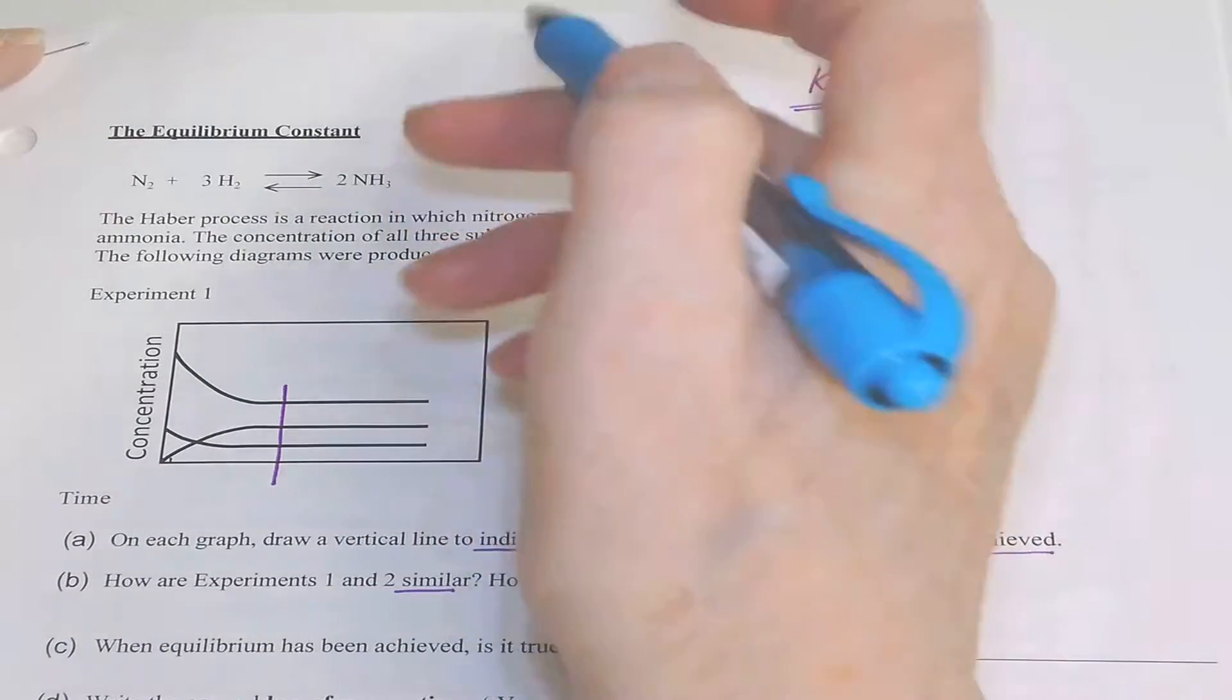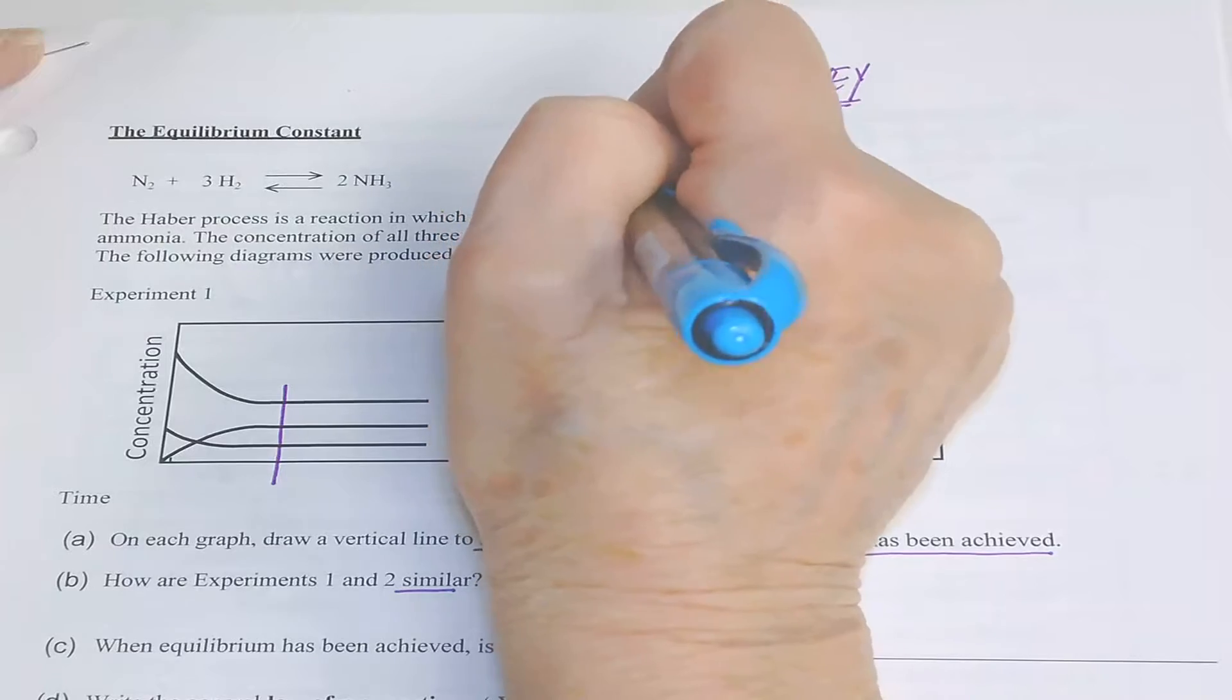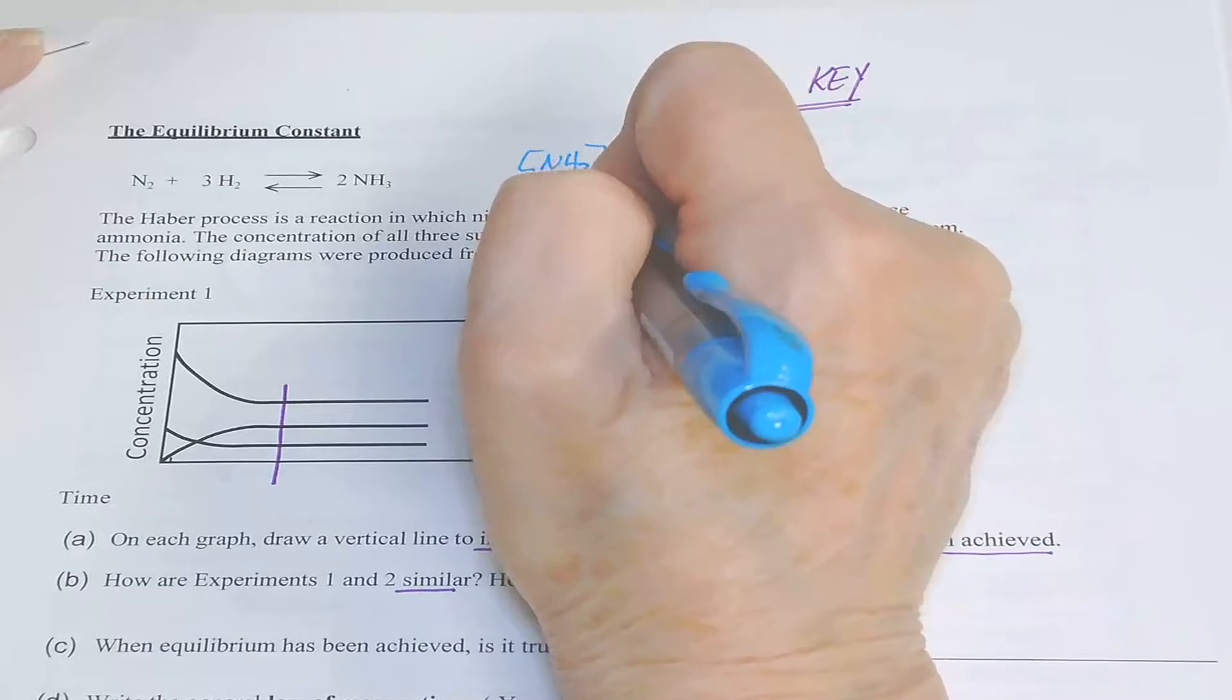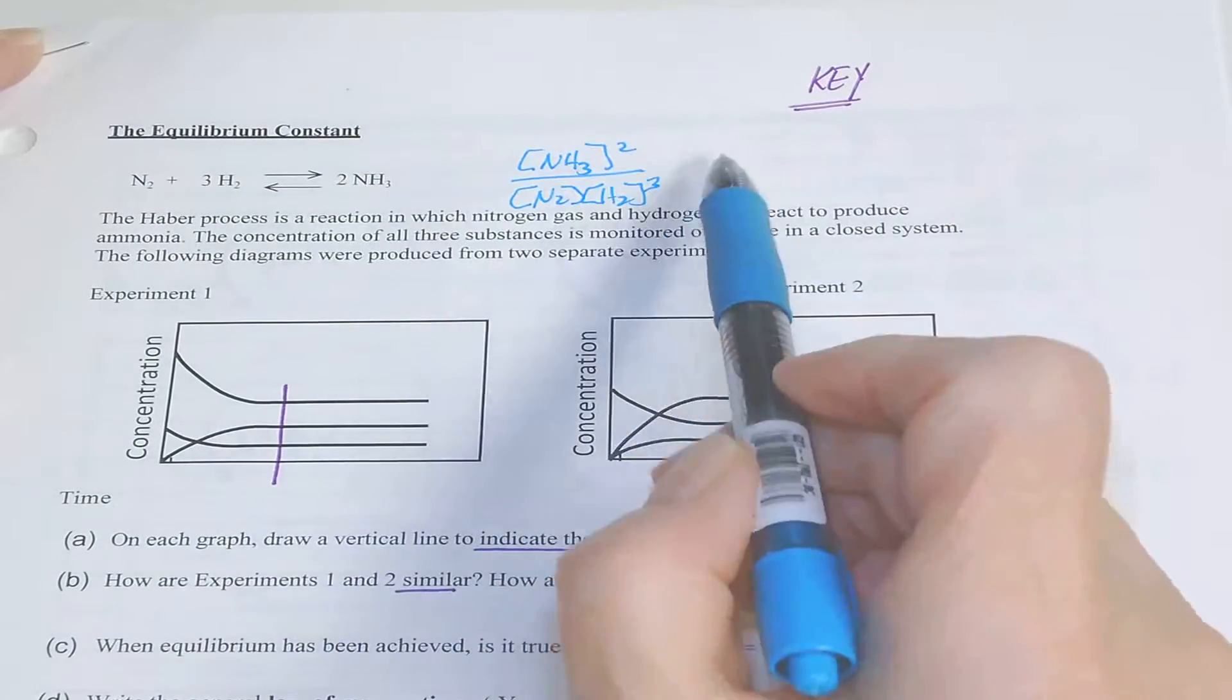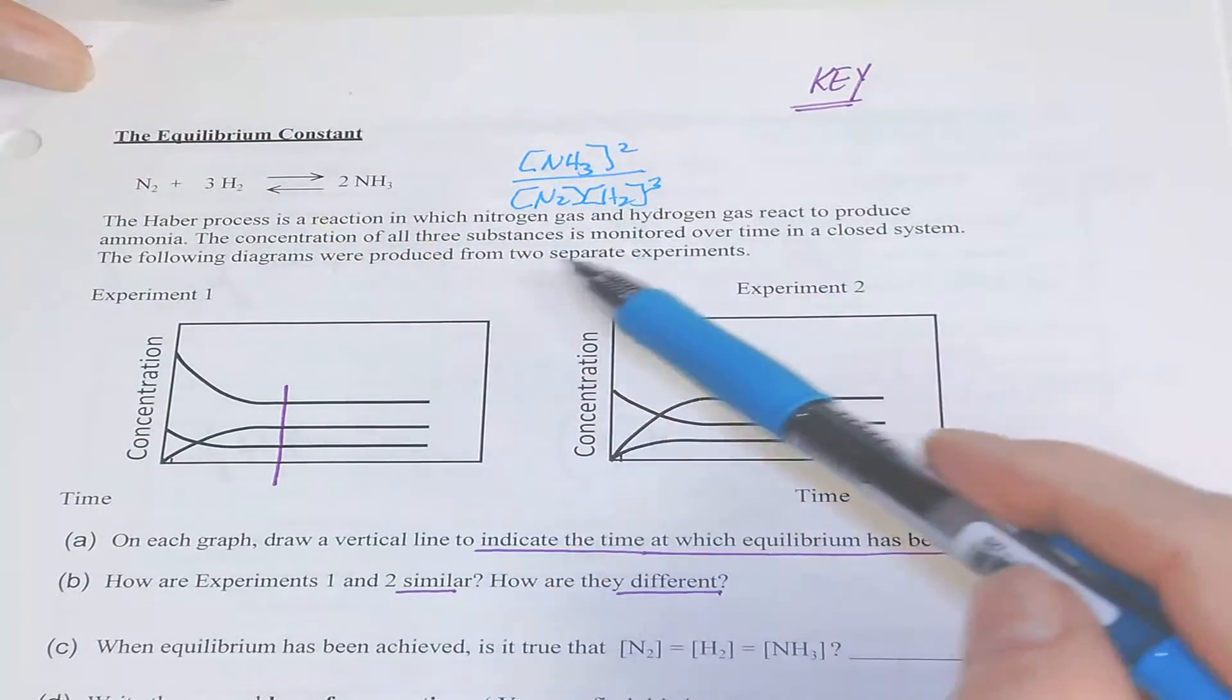This will be written as your products raised to the power of their coefficient over your reactants raised to the power of their coefficient. So this expression will allow you to calculate not only the equilibrium constant, but all equilibrium concentrations.